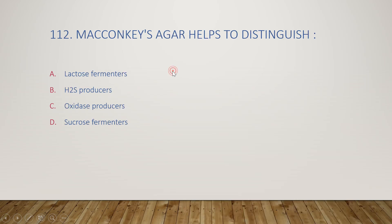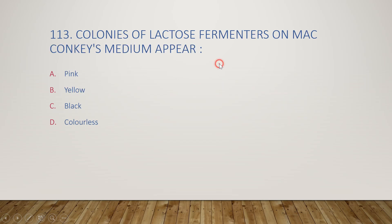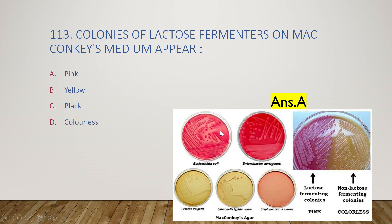Next question: MacConkey's agar helps to distinguish lactose fermenters, H2S producers, oxidase producers, or sucrose fermenters? The right answer is option A, lactose fermenters. Colonies of lactose fermenters on MacConkey's medium appear pink, while non-lactose fermenting colonies are colorless.